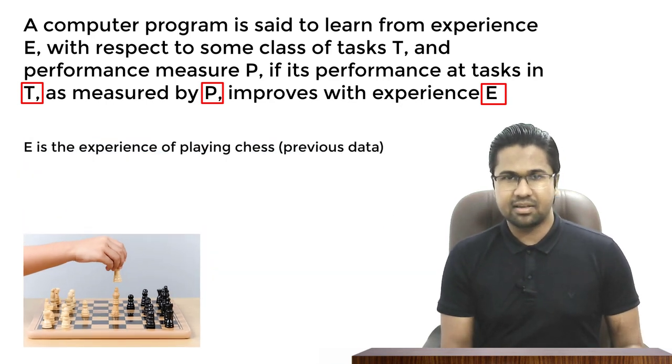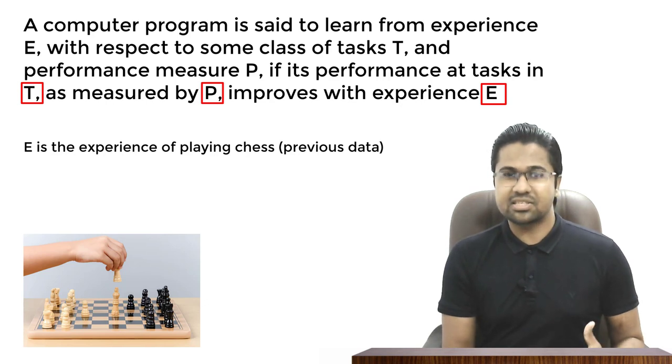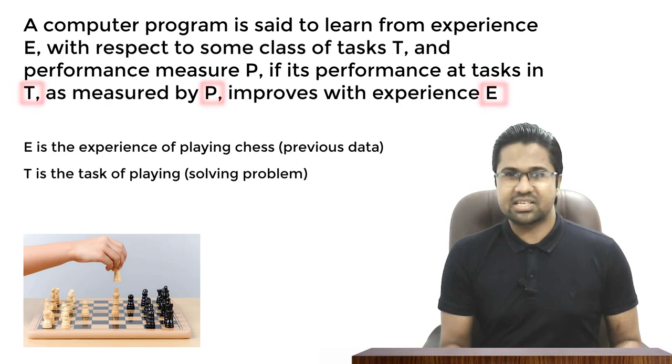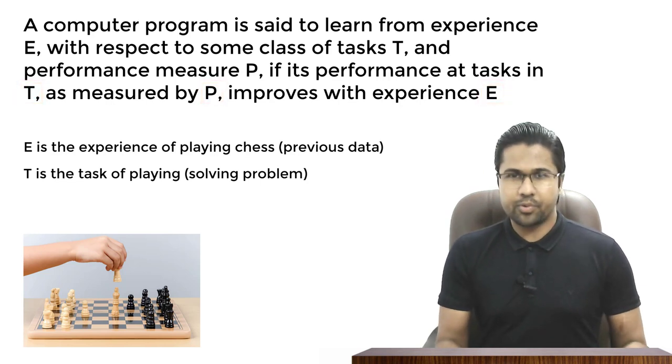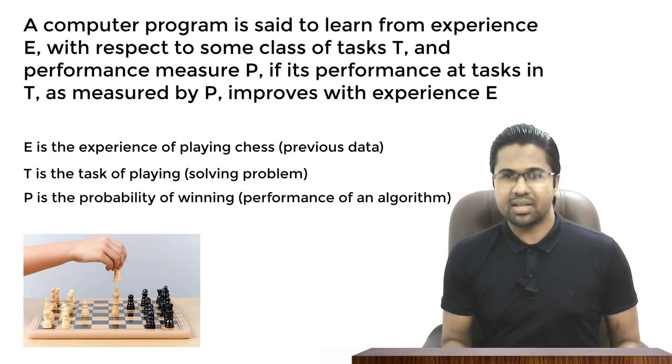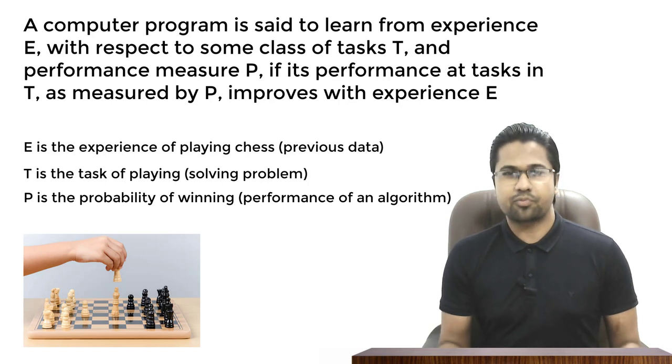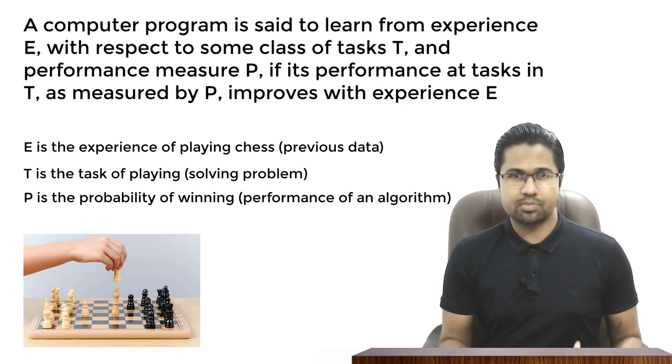Here, E is the experience of playing chess. We can consider it as data. T is the task of playing. We can consider it as solving a problem. P is the probability of winning. We can consider it as the performance of an algorithm to solve a problem using previous data.